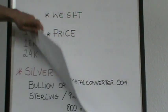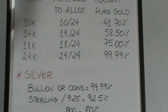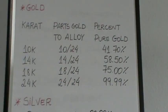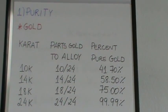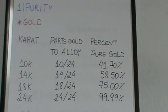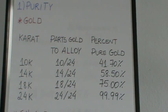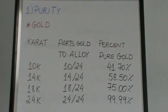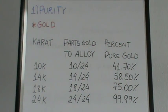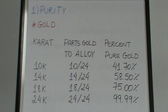So let's check out the first input: the purity. Now when looking at gold, you're going to be dealing with carats: 10, 14, 18, 24. These give you a breakdown of the percent of gold in your item. If your item is marked 10 carats, it's 41.7% gold. All the way down to 24 karat, you can see, is pure gold.